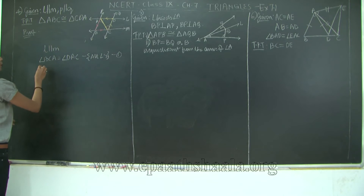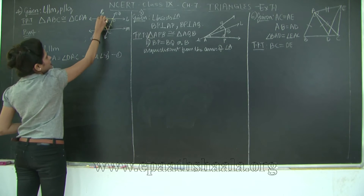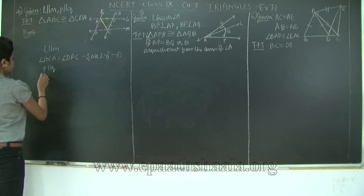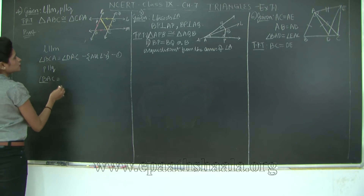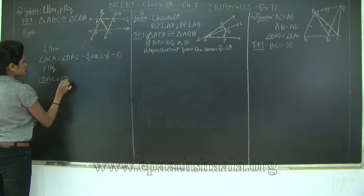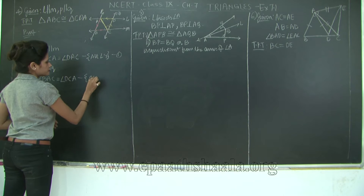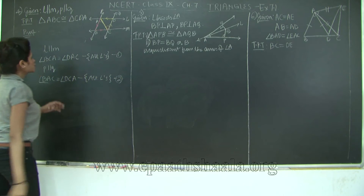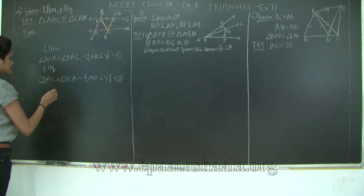Also, P is parallel to Q. So the alternate angles give us angle BAC equal to angle DCA. I will mark this as statement 2. Now I am going to take these two triangles and prove them congruent through the ASA test.